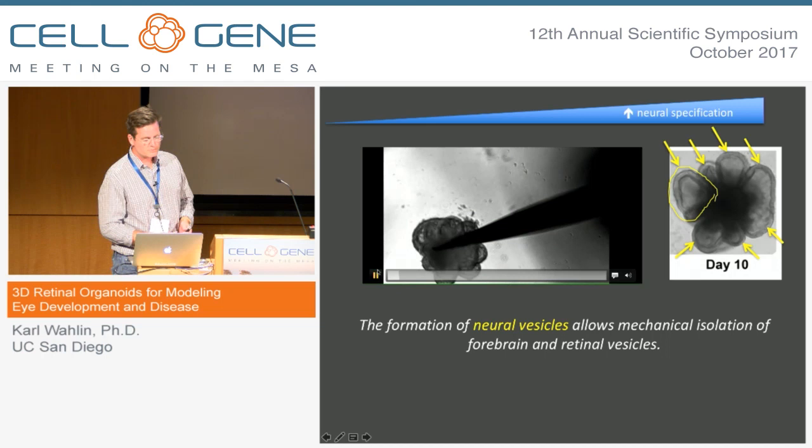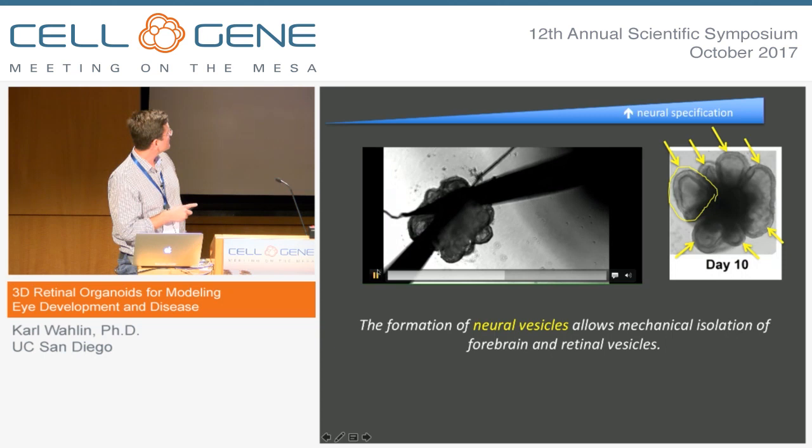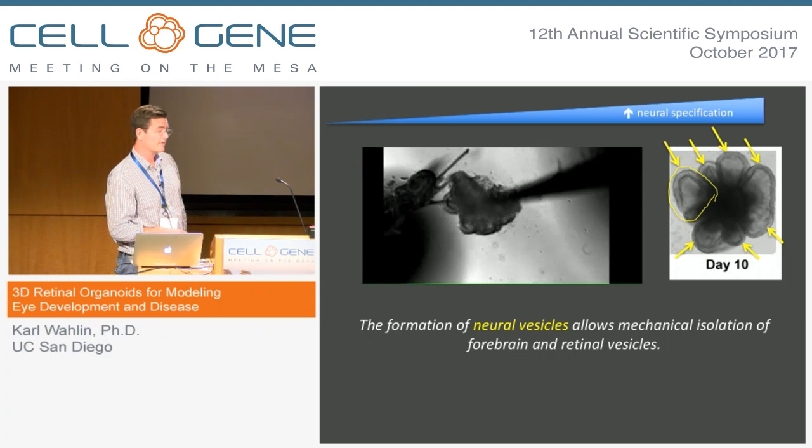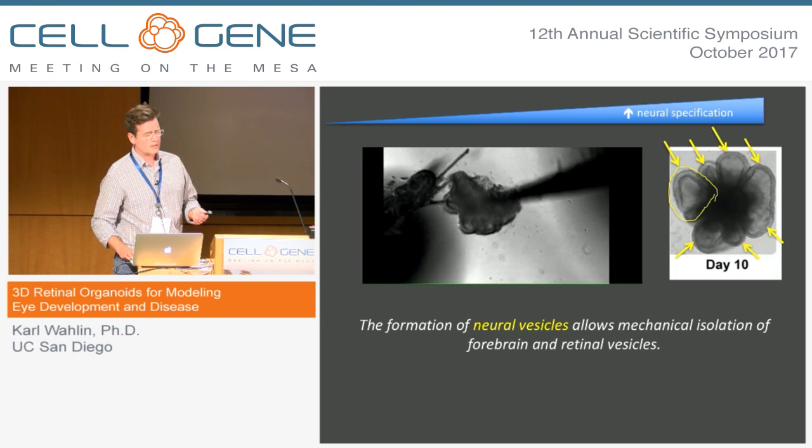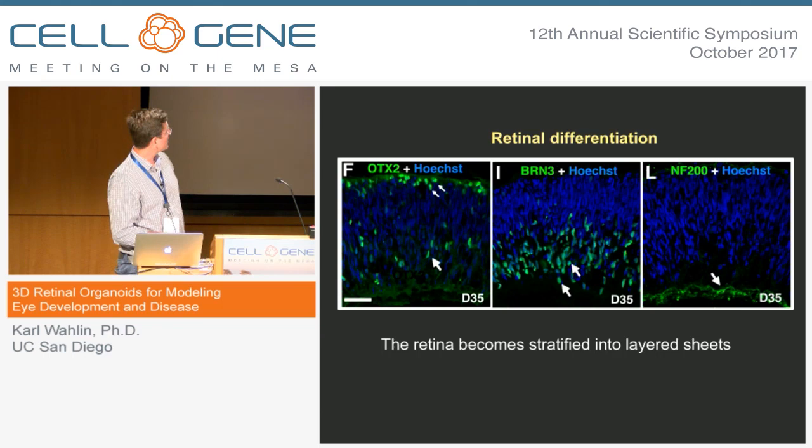Once we have these vesicles, we have to isolate them. This actually looks more challenging than it is — each structure is about 500 microns, and you can get about five or six per minute. With a 96-well plate it takes a few hours, which is a little bit of work, but in the end you have a lot of these structures to work with. You'll throw out many that don't meet strict quality control, but we have a lot of tissue, so that's okay.